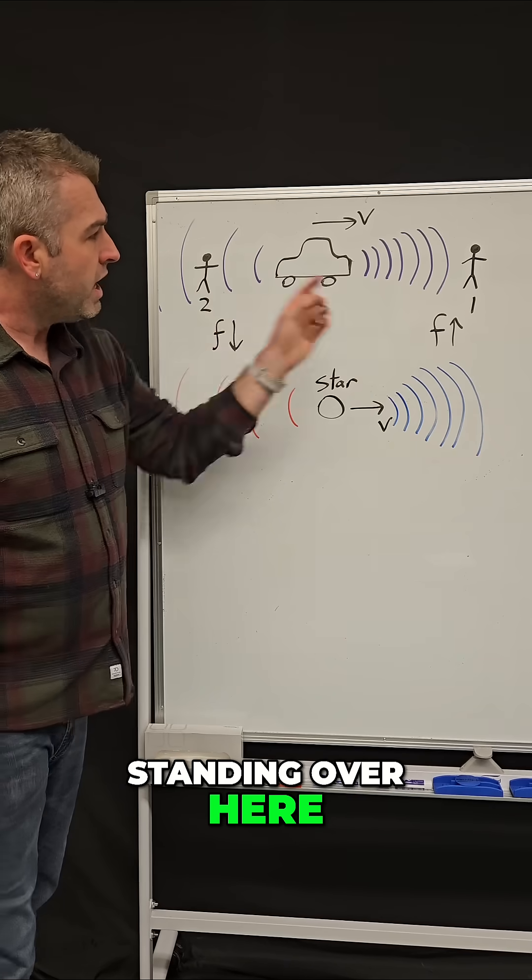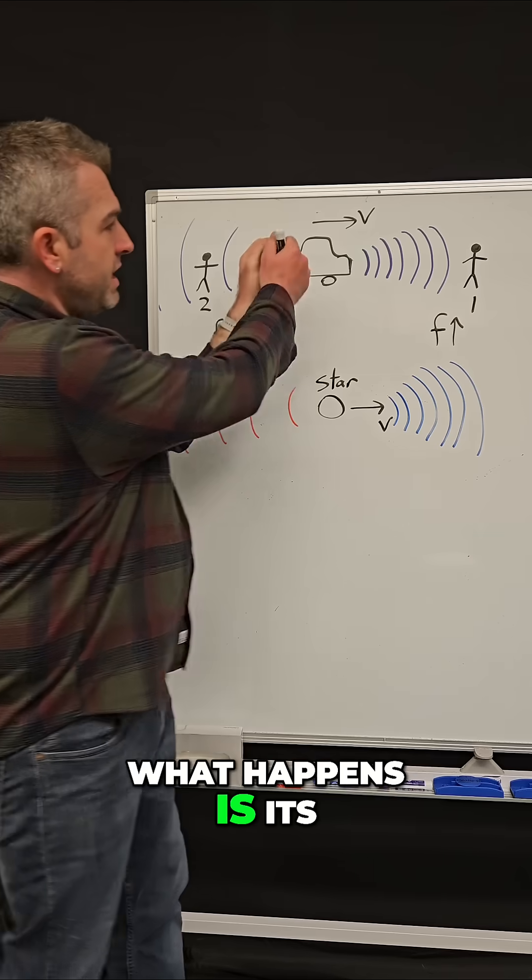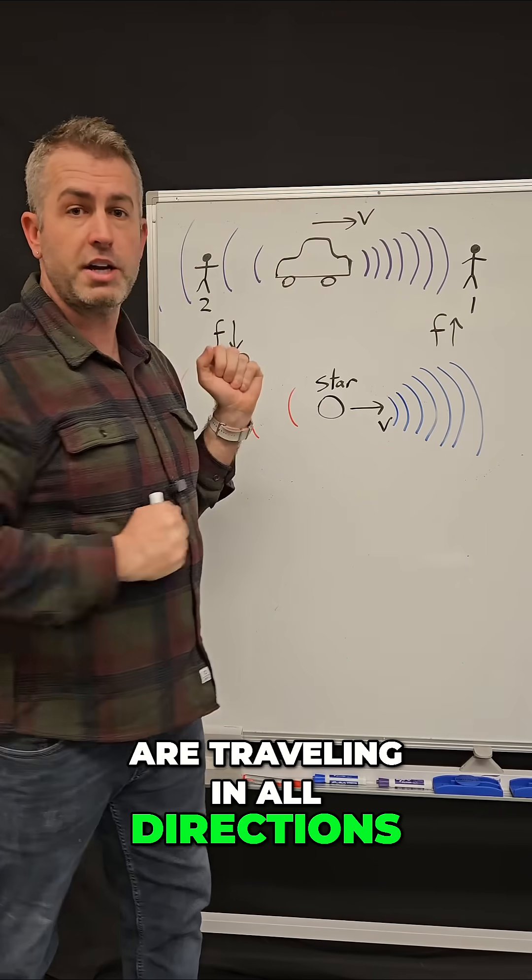If you're a person standing over here, as this car is driving towards you with some velocity, what happens is its sirens are producing sound waves, and those sound waves are traveling in all directions.